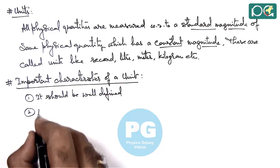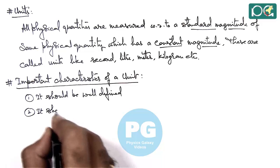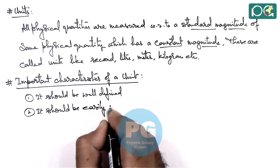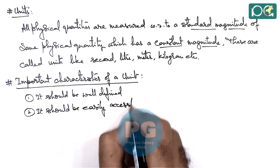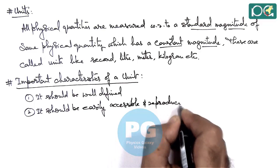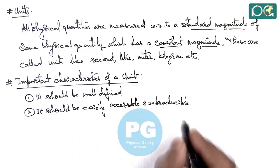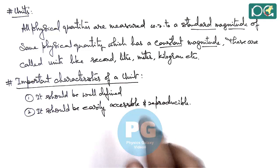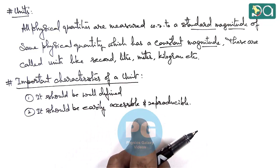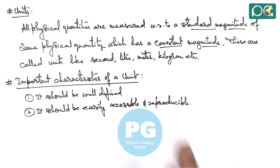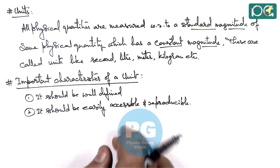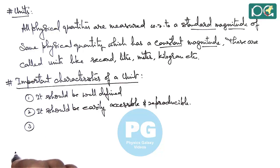Number 2 is: it should be easily accessible and reproducible. The unit which is well defined must be easily accessible — that can be measured clearly. Reproducible means any number of times we can use the same unit for the same physical quantity.